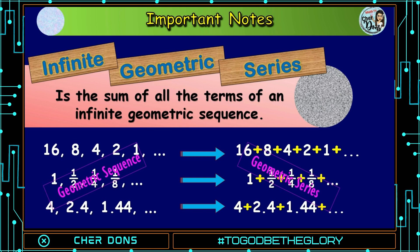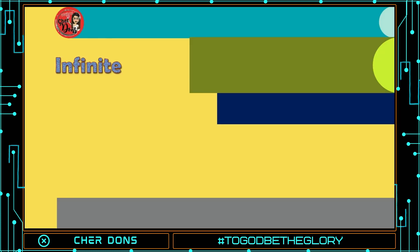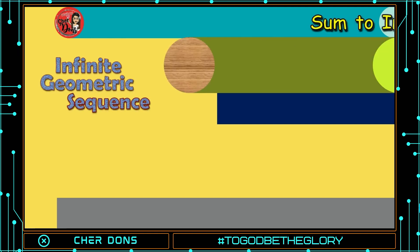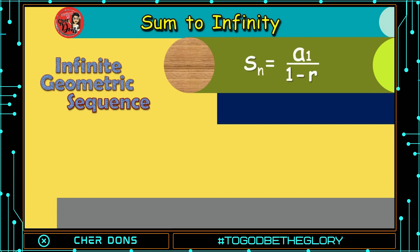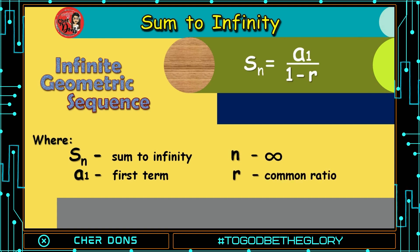Now, the question is: is it possible to get the sum of an infinite geometric sequence? Definitely yes, it is possible. The formula for finding the sum of an infinite geometric sequence, also known as sum to infinity, is S sub n equals a sub 1 all over 1 minus r. Where S sub n is the sum to infinity, a sub 1 is the first term, n is infinite, and r is the common ratio. Remember that the sum of an infinite geometric series only exists if r is between negative 1 and 1.